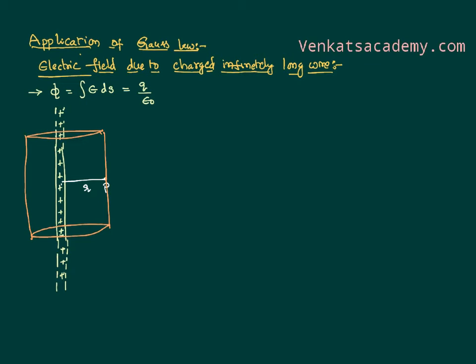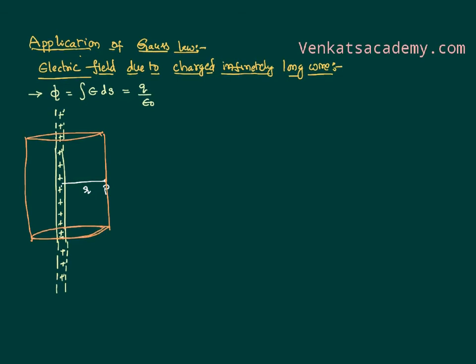There are different parts of the cylinder: the circular faces and the curved face. Let us consider the circular face. Because the charge is positive, at any point on the circular face, the electric field is always radially outward. The surface area vector of a small element on the circular face is also radially outward. However, for the circular face, the electric field direction and the surface area normal are actually perpendicular to each other.